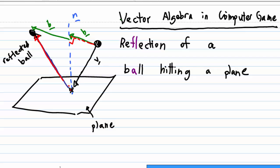So the reflected direction of the ball is given by minus v plus 2b.